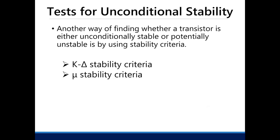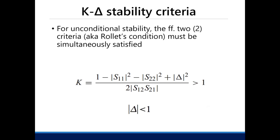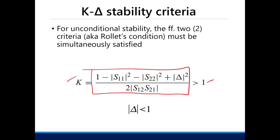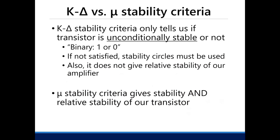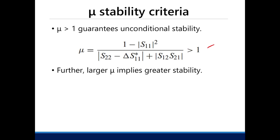Another way to check if your transistor is unconditionally stable without using circles is to use the K-delta criterion and the mu stability criterion. The K-delta stability criterion: if K is greater than 1 and the corresponding |delta| is less than 1, then the transistor is unconditionally stable. However, it only tells us binary information — unconditionally stable or potentially unstable. It does not give the relative stability of your amplifier. That's what the mu stability criterion gives us: if mu is larger, then we have better stability.